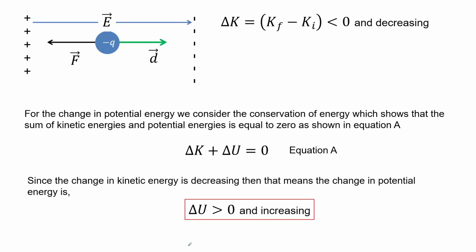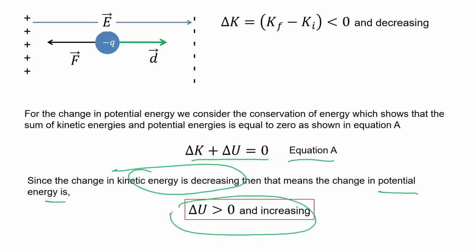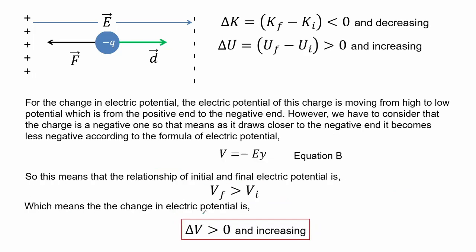For the change in potential energy, we use conservation of energy: the sum of changes in kinetic and potential energies equals zero. Since the change in kinetic energy is decreasing, the change in potential energy is greater than zero — it is increasing as the negative charge draws closer. For the change in electric potential: the charge moves from high to low potential, from positive end to negative end. However, since the charge is negative, as it draws closer to the negative end it becomes less negative according to the formula for electric potential. So the final electric potential is greater than the initial, meaning the change in electric potential is positive and increasing.